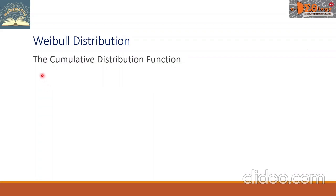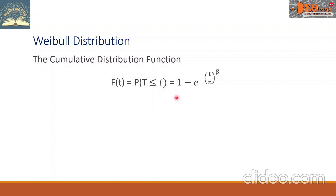Let's now look at the cumulative distribution function, or CDF. We use capital F of t as the symbol. This is equal to P of T less than or equal to t, which is equal to 1 minus the exponential of the negative of the fraction t over alpha raised to beta.